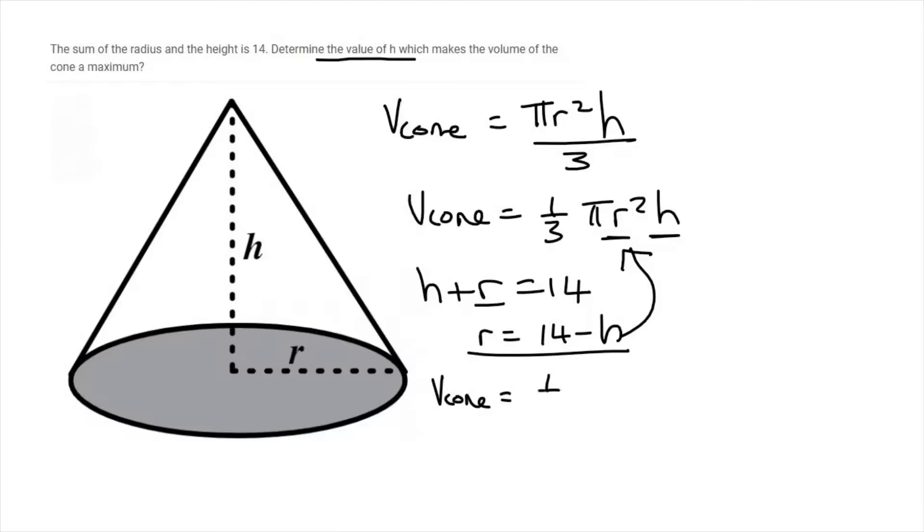So volume of the cone is going to be a third pi. Then the radius is going to be 14 minus h squared times height. Look at that. We've now replaced the r with h. And so now we need to neaten this up.